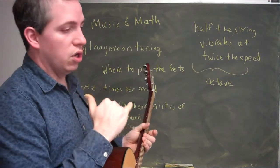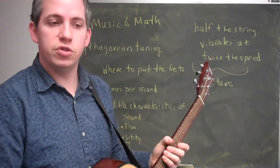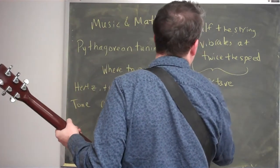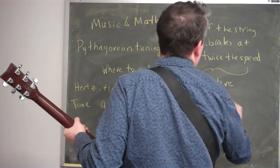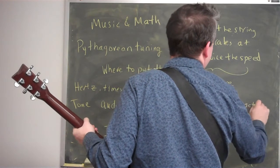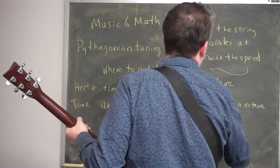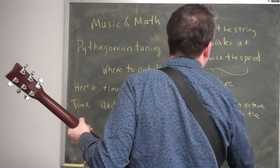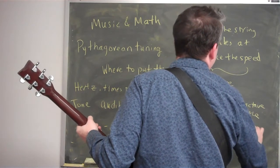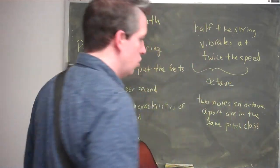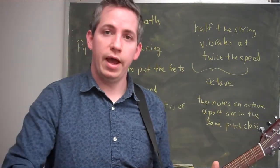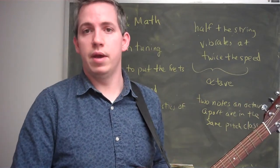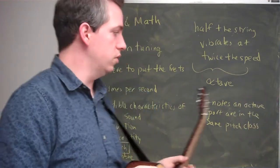We call this shift from one note to the next note an octave. These two pitches are so close to each other that we call them by the same name — they are in the same pitch class. So two notes an octave apart are in the same pitch class. If you ever see a low D and a high D, they are in the same pitch class, just separated by an octave or two octaves or three octaves.